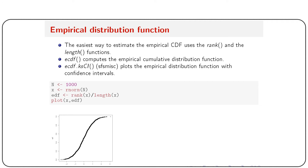Next, we'll see how to generate an empirical distribution function. The easiest way is to use the rank and length functions: the estimated distribution function is rank(x) / length(x). For example, n equals 1000 and x is generated from the standard normal distribution using rnorm. Plotting edf against x will give you the estimated distribution function.